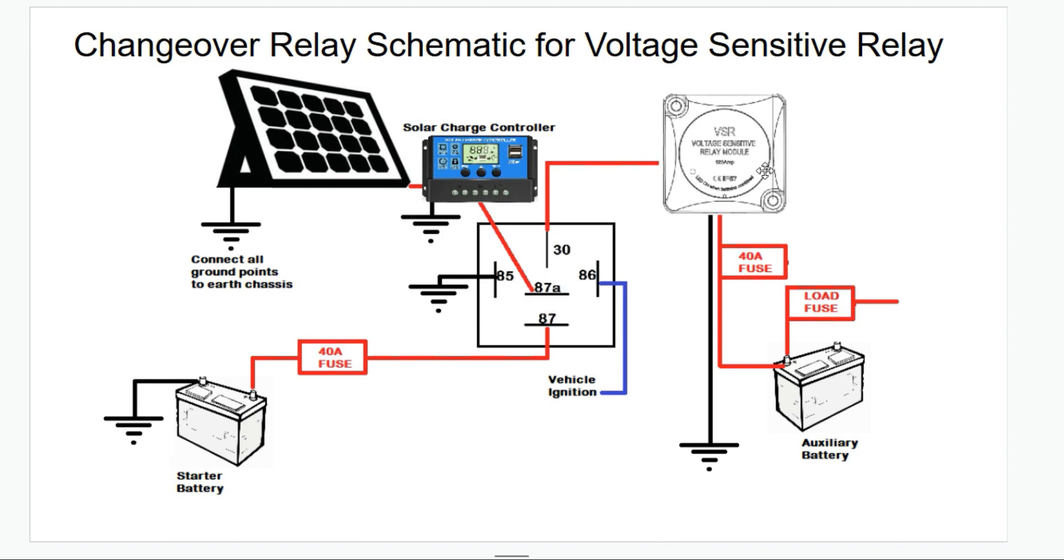And then once the input from pin 87A, which is the solar charge controller, once that source stops, so once it's dark, then the voltage sensitive relay will continue to do its thing until the auxiliary battery drains down below a certain voltage and then the voltage sensitive relay will disconnect from the relay.